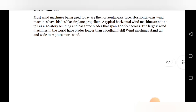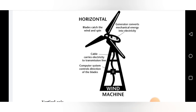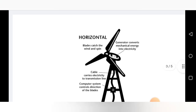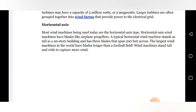The first type is the horizontal axis wind machine. Looking at the diagram, the shaft axis is in the horizontal position — that is why it is called a horizontal shaft machine. Some components visible here include: cables that carry electricity to transmission lines, blades that catch the wind and spin, a generator that converts mechanical energy into electrical energy, and a computer system that controls the direction of the blades. Most wind machines used today are the horizontal axis type because air normally flows in the horizontal direction.